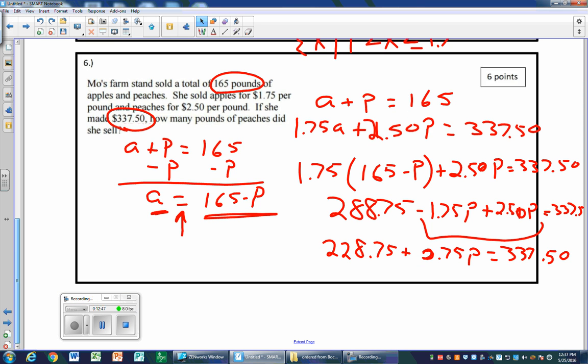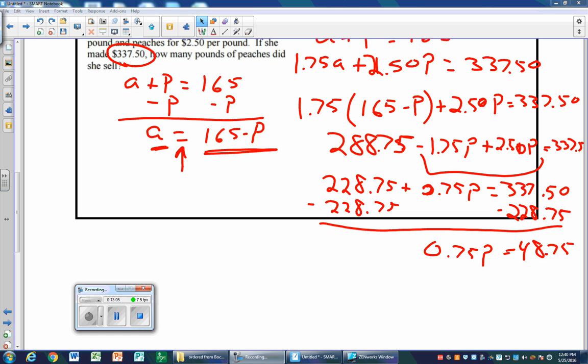This is 288.75 here. So I just combined those, I get positive 0.75. Now I am going to remove the 288.75 from both sides. So I have 0.75p equals 48.75. When I divide by 0.75, I get p equals 65.